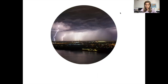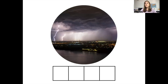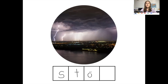Our next word is storm. How many sounds do you hear in the word storm? There are four sounds in the word storm. The first sound is S — the letter S. The second sound is T — the letter T. The next sound is 'or,' spelled O-R. And the last sound is M — the letter M. This is how you spell storm.